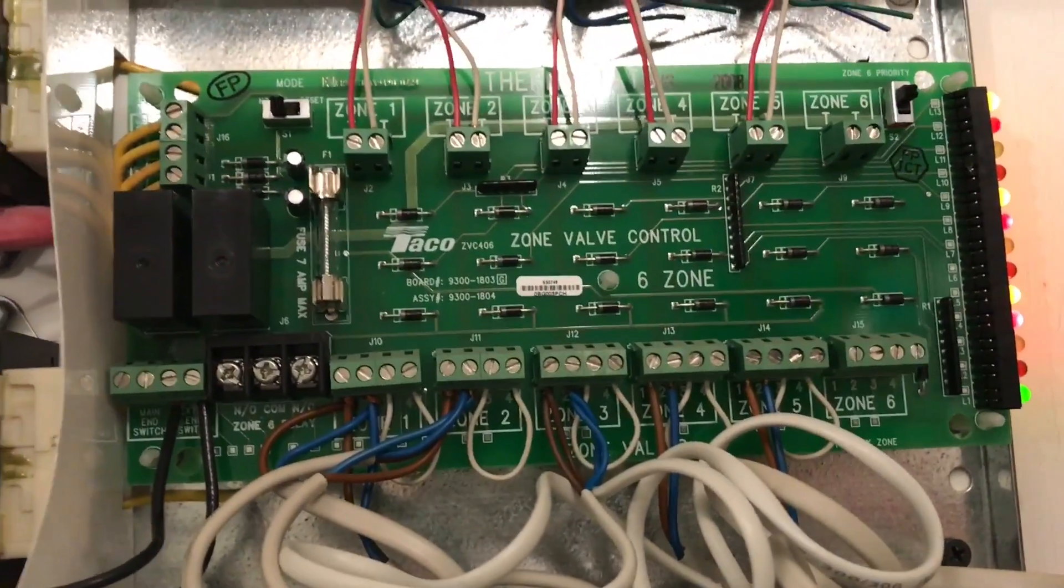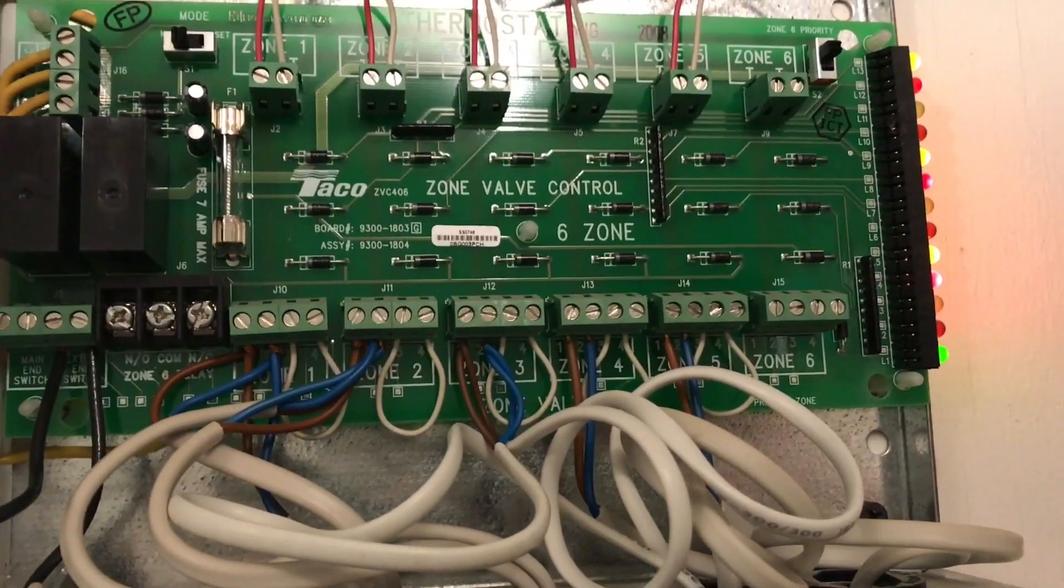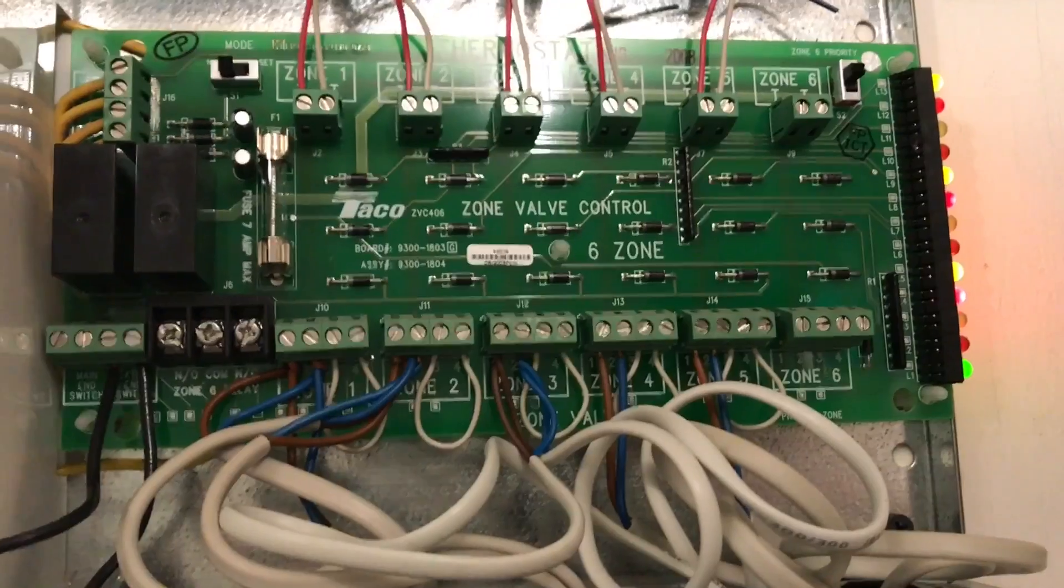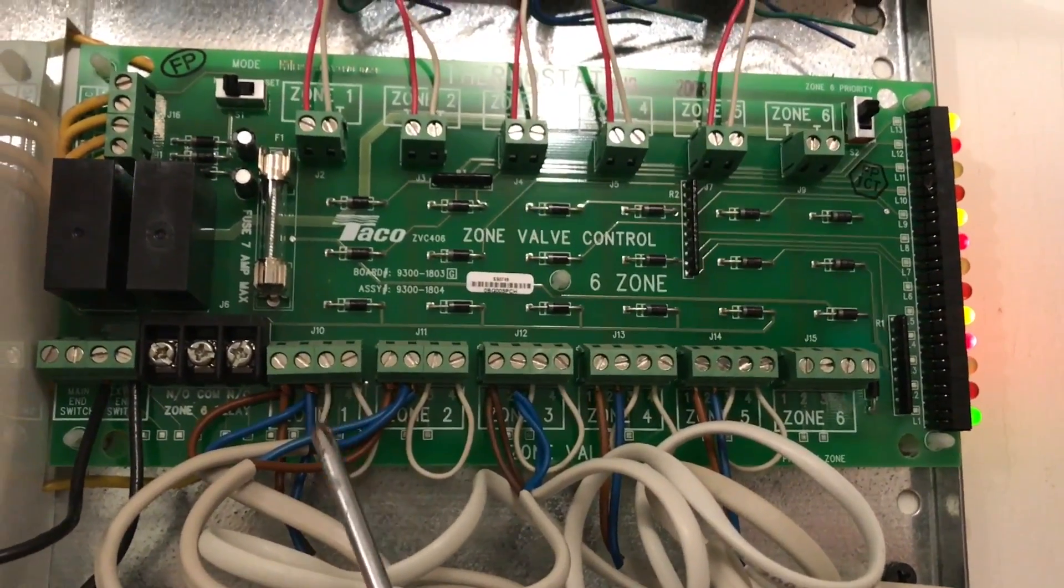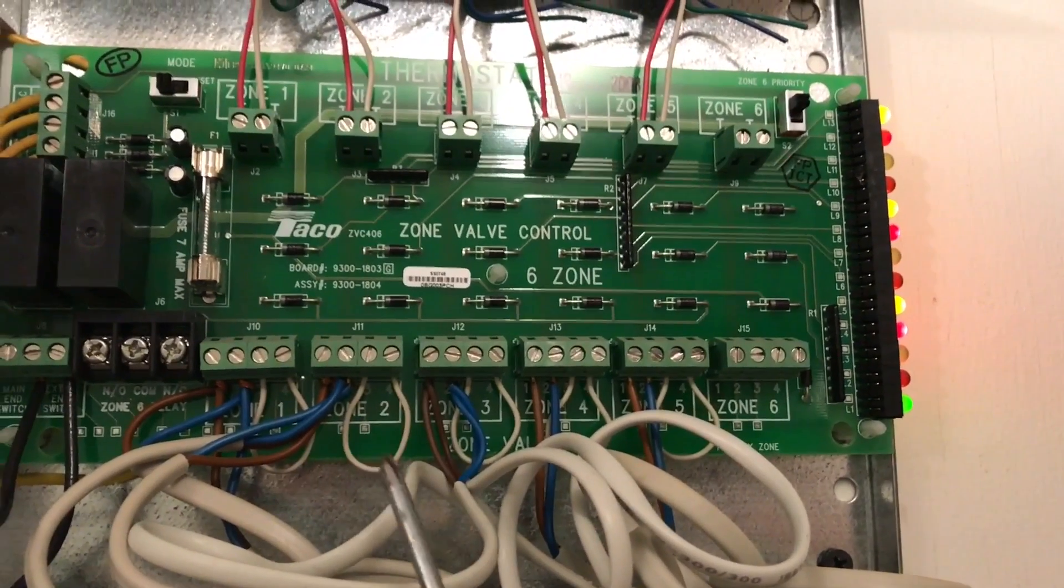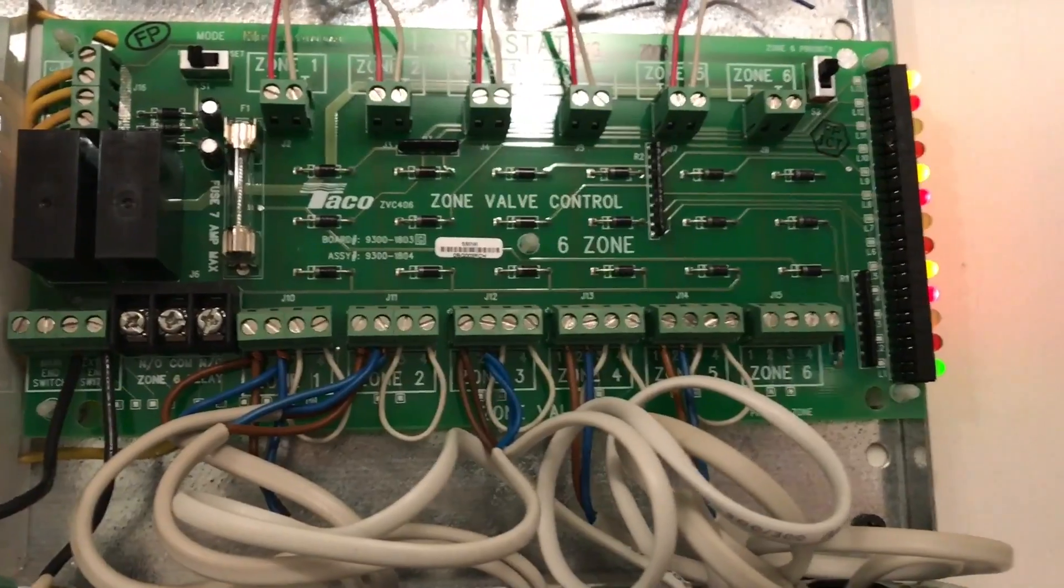So pretty straightforward. I do use a two wire actuator. Makes it a little simpler. So all I do is just jumper those last two, you can see a little jumper wire there on the last two terminals for those heating zones.